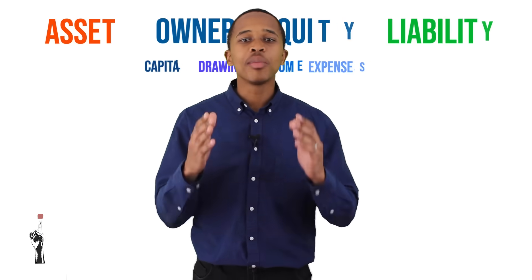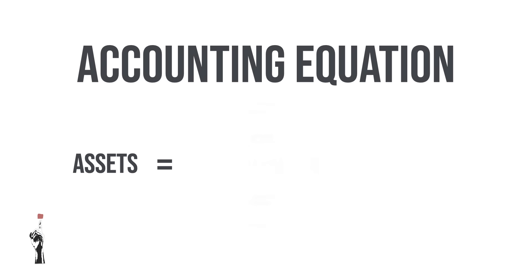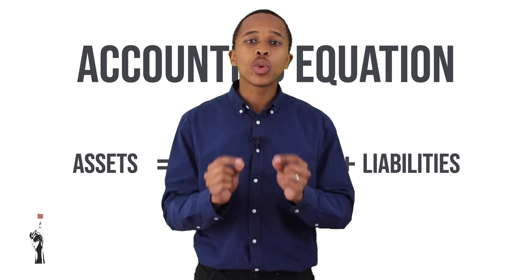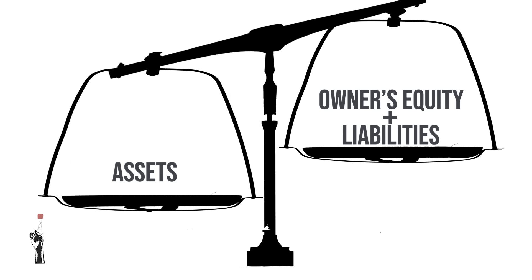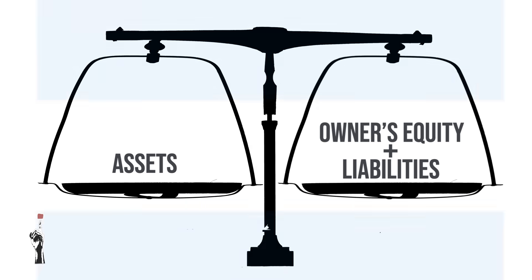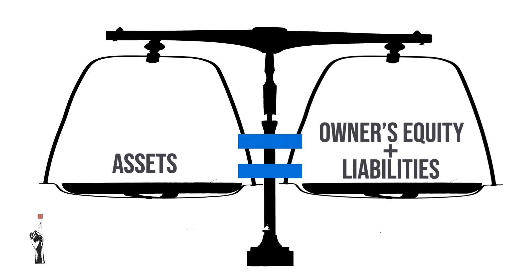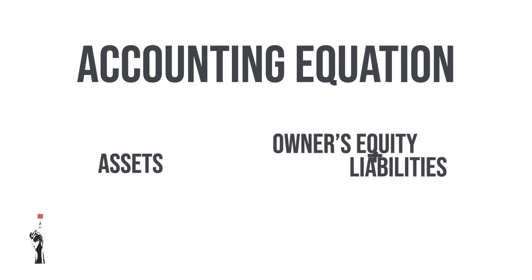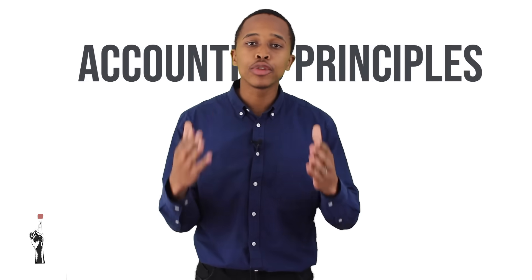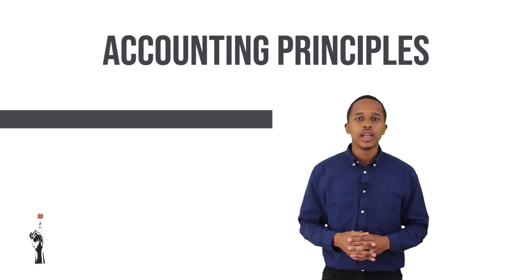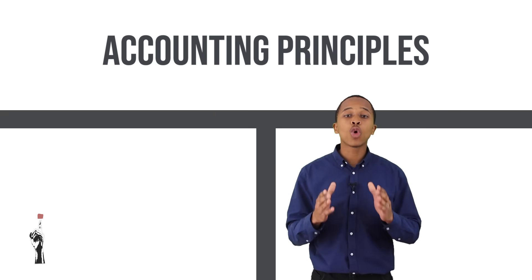Can you remember the accounting equation from Grade 8? Assets equal owner's equity plus liabilities. This equation needs to balance at all times, meaning the value on the left-hand side of the equation needs to match the right-hand side. We will look at the accounting equation in more detail later in the series, but for now let's look at a few accounting principles and recap the T-account.